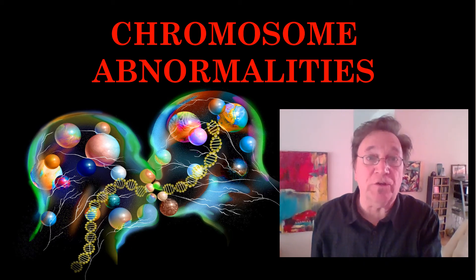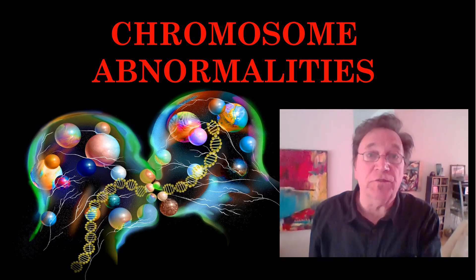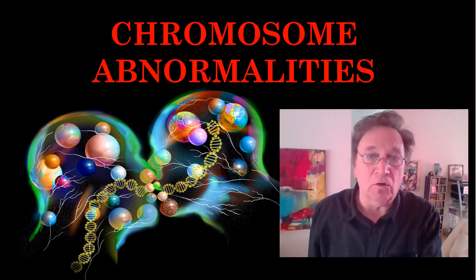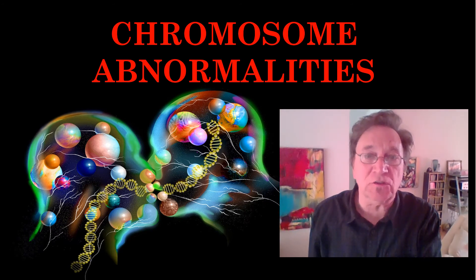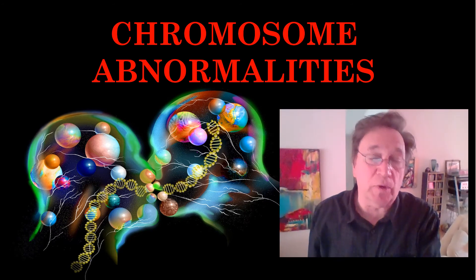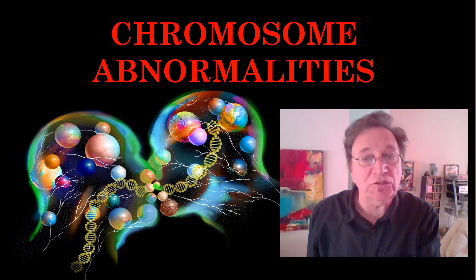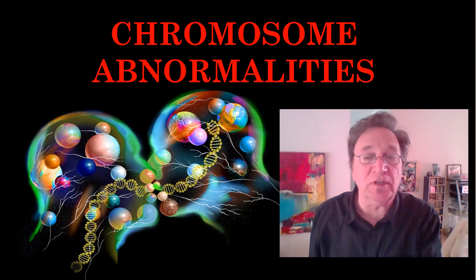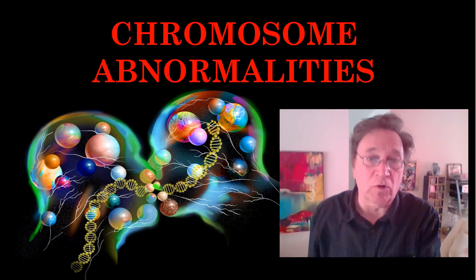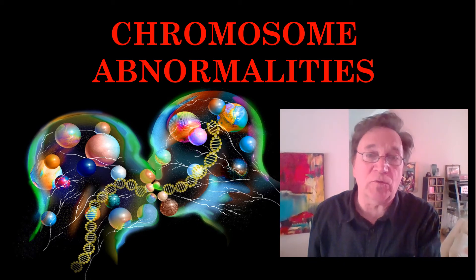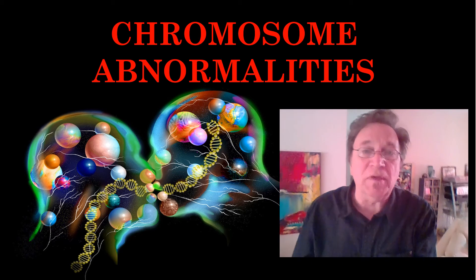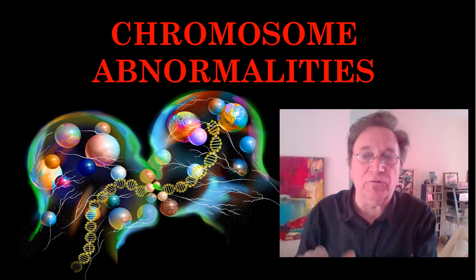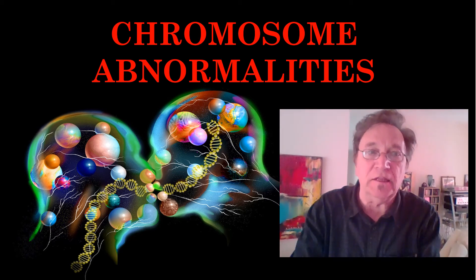Hi, I'm psychology professor Bruce Heinrichs. In this video, I'm going to tell you about chromosome abnormalities. Typically, human beings inherit 46 chromosomes, 23 from mom and 23 from dad. But occasionally a mistake happens and a person gets the wrong number of chromosomes. That's called a chromosome abnormality. It doesn't mean that the chromosomes are abnormal — it means you have the wrong number.